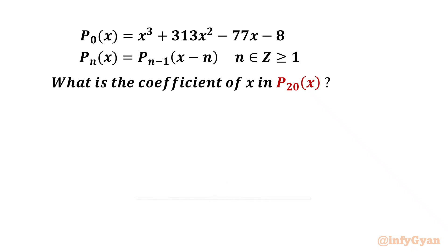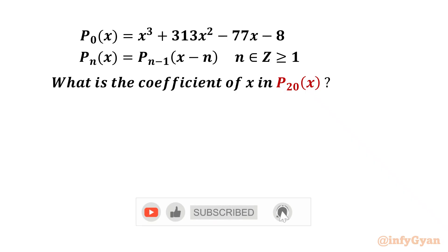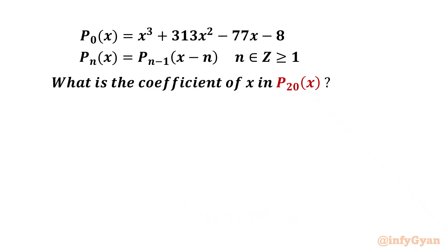Hello my dear friends, welcome back to InfiGyan. Today in this video we have one very interesting question from algebra which is on polynomial functions. Here we have P₀(x) = x³ + 313x² - 77x - 8, and the relationship given is Pₙ(x) = Pₙ₋₁(x - n), where n belongs to integers greater than or equal to 1. We have to find the coefficient of x in P₂₀(x).